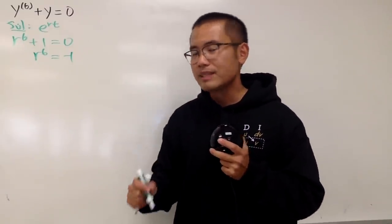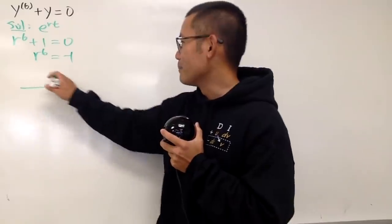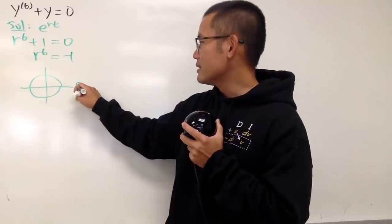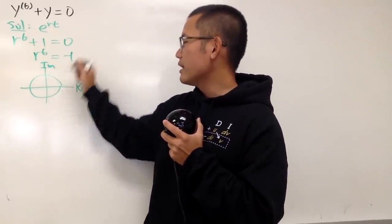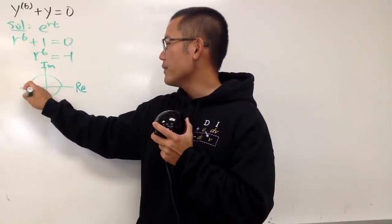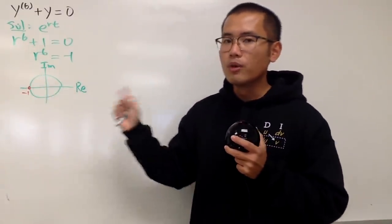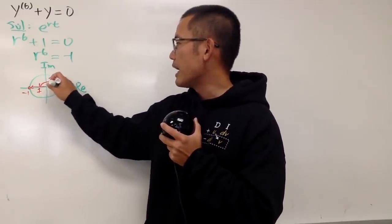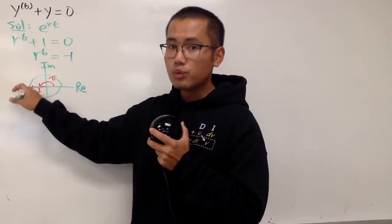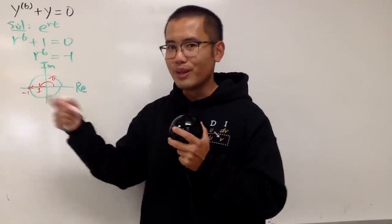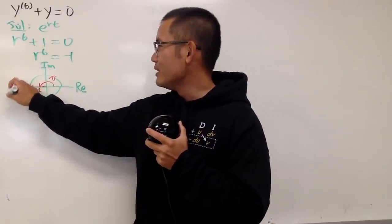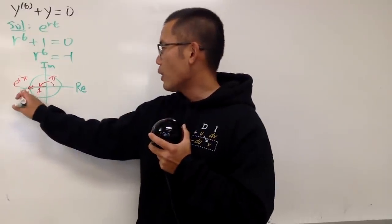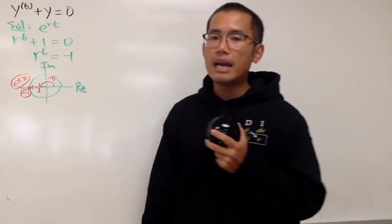Look at negative 1 in the complex world. Here is the complex plane — this right here is the real axis, and this is the imaginary axis, and negative 1 is right here. Let's also look at the polar form of this. The distance is 1, and the angle from here to here is pi. So in other words, this is r = 1 (where r is for the distance, not this r), and then e to the i theta, which is pi. So the negative 1 in the complex world is e to the i pi.